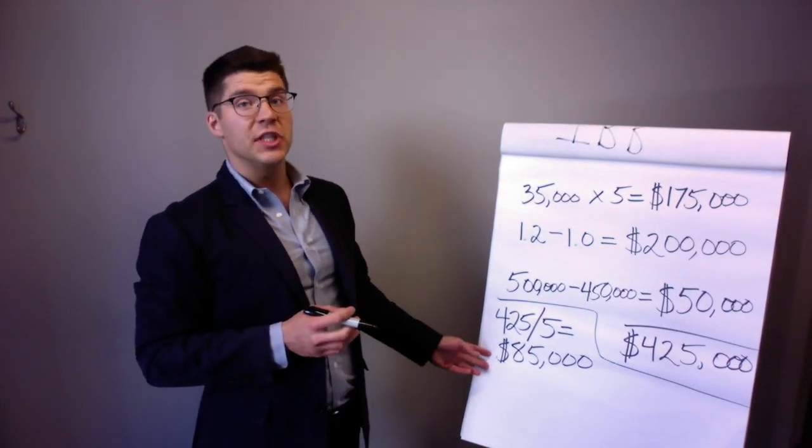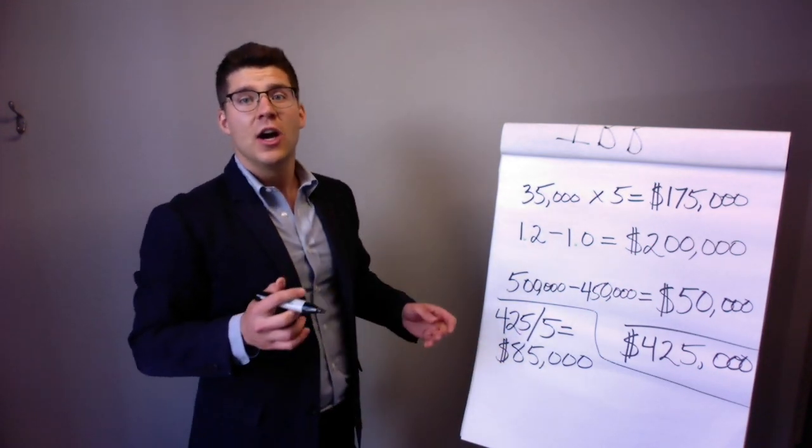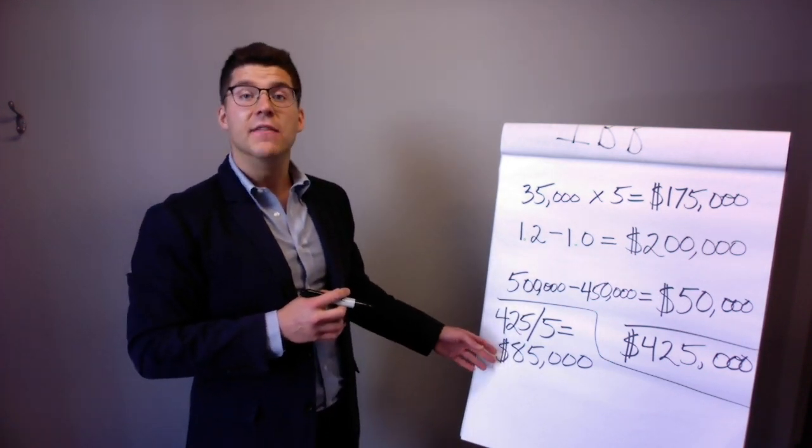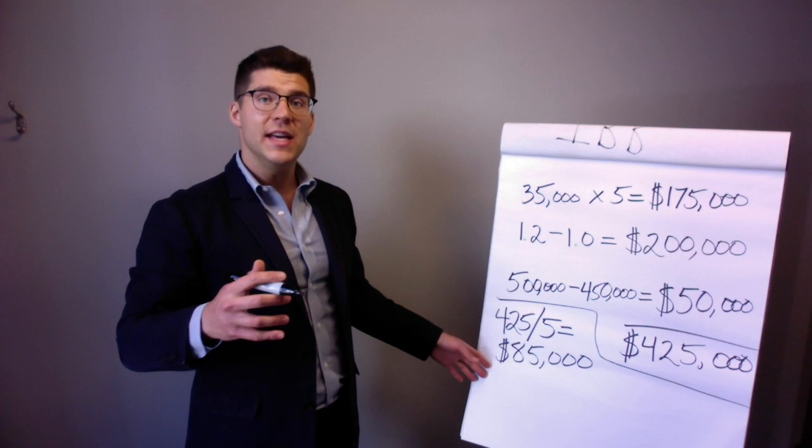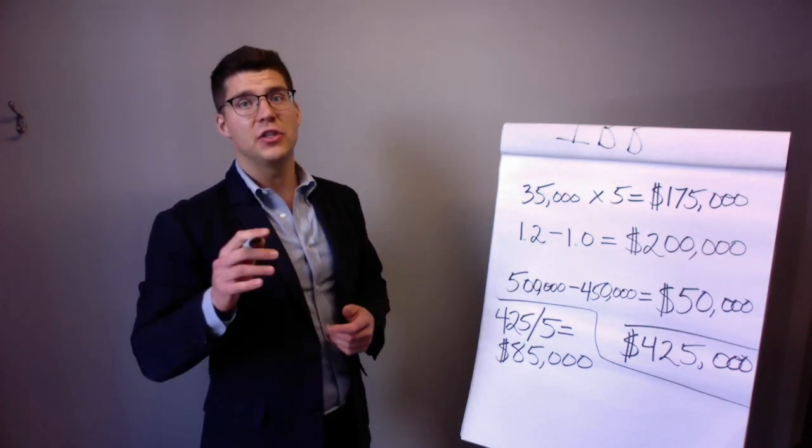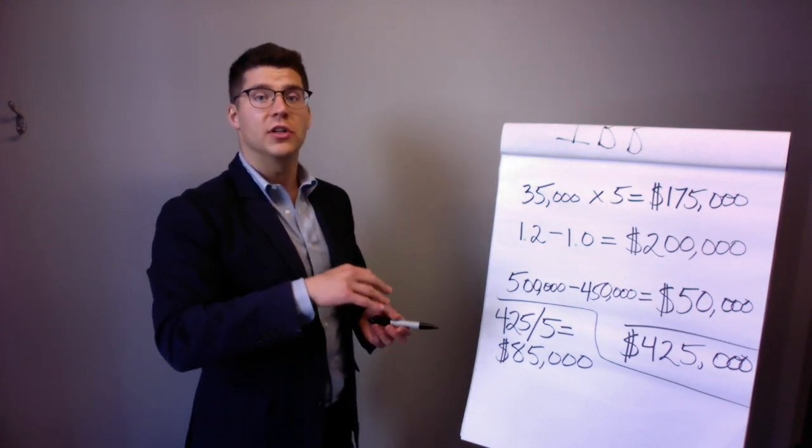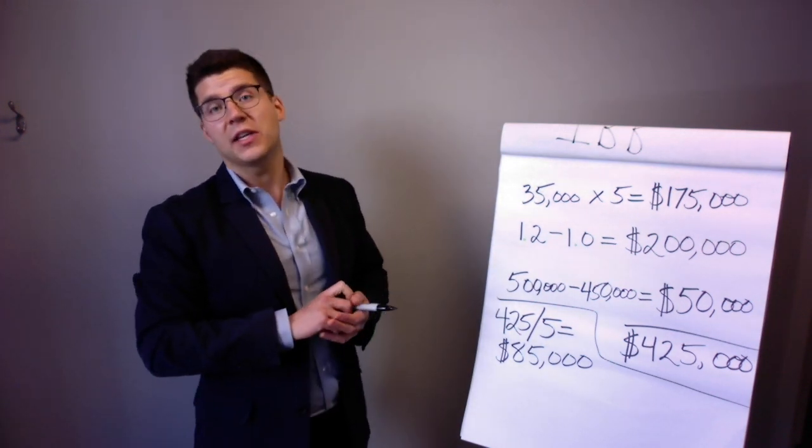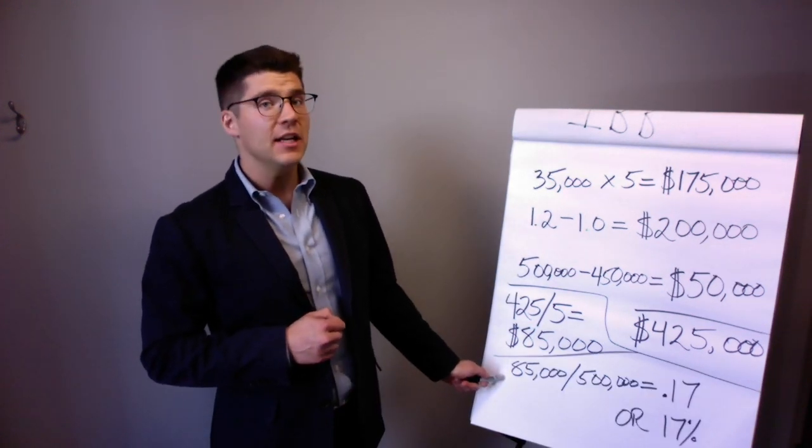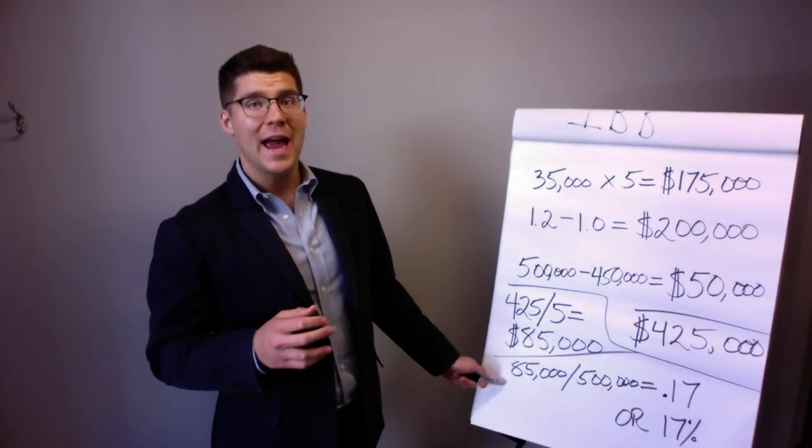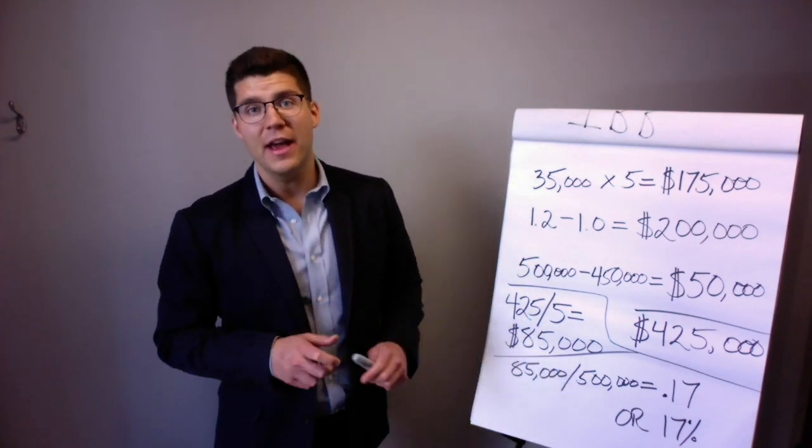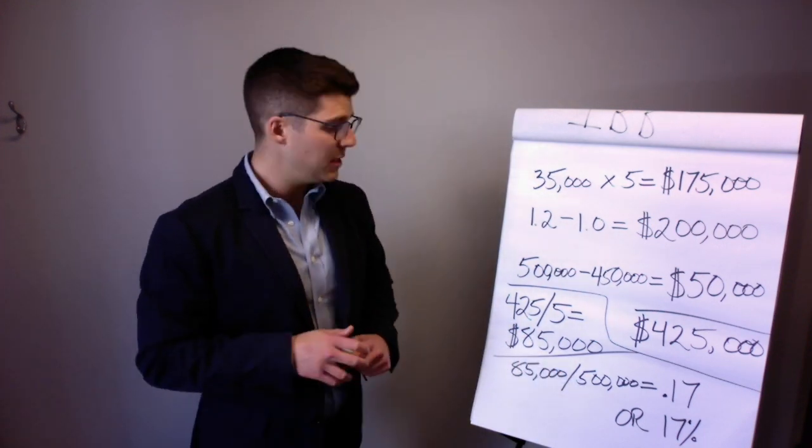And now to find out what this represents as a percent, all we have to do is take our annual return and divide it by our original investment, which in this case was $500,000—that's the total amount of money that we put down ourselves. That's going to get us our IRR. So we take our $85,000 average return and divide it by our $500,000 initial investment, and we get 0.17, or convert that to a percentage: 17% IRR.